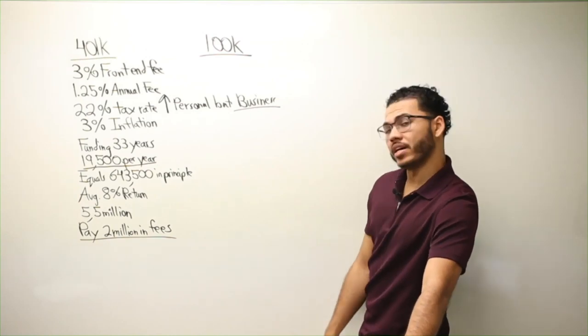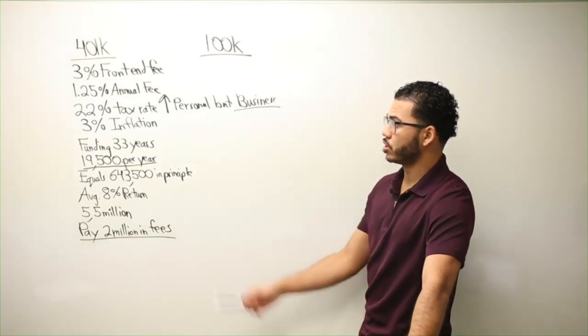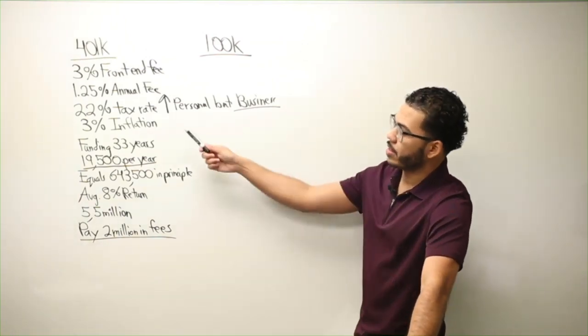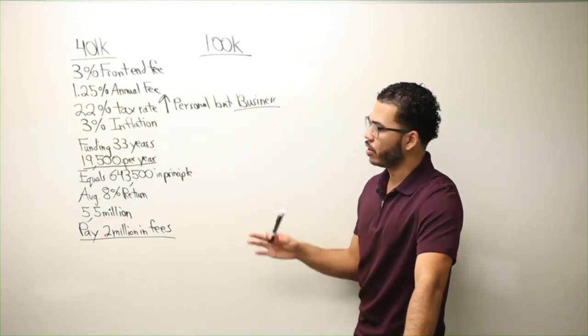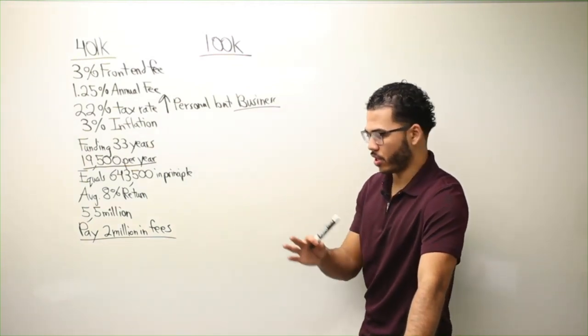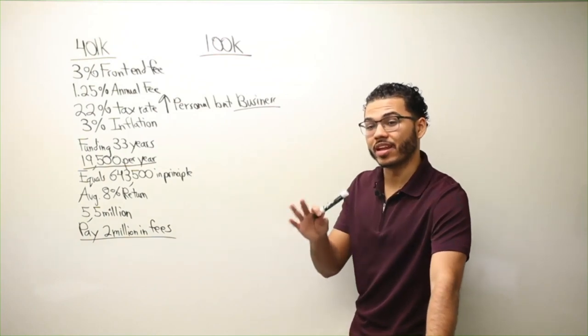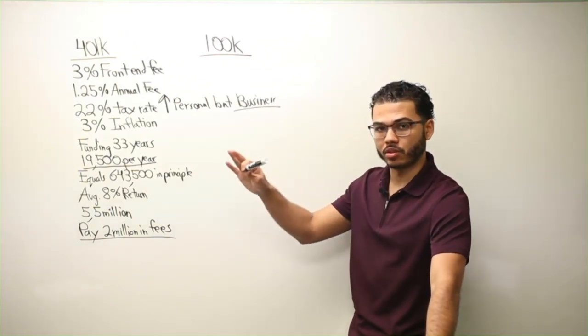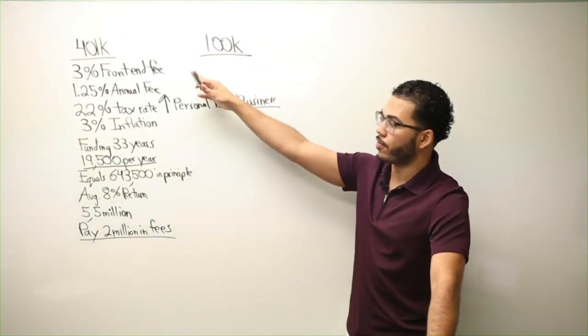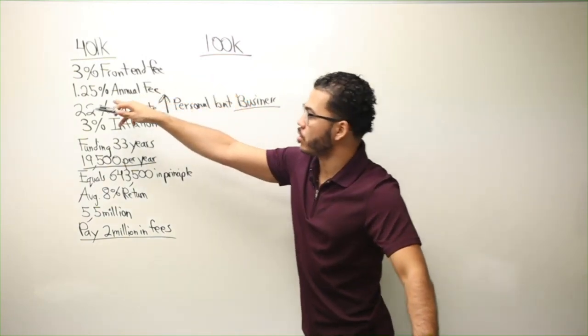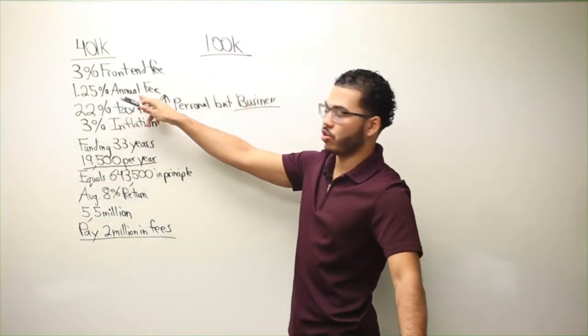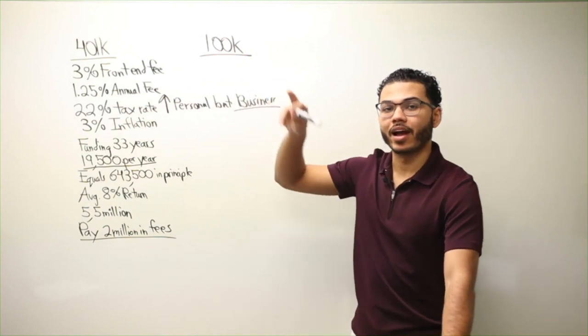So you're going to get busted up just on the tax rate. Now you have to worry about inflation, whether the number is 1%, 2%, 3%. You have to understand that that number compounds just like the fees. Same thing with this 1.25% annual. That compounds.